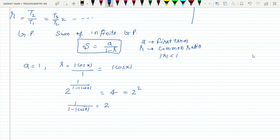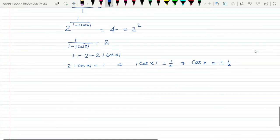Here a equals 1 and r equals mod cos x. So 2^(1+cos x) = 4 = 2². This gives 1 plus mod cos x = 2, so 2 mod cos x = 1. Therefore mod cos x equals 1/2, which means cos x equals plus or minus 1/2.